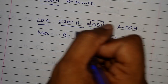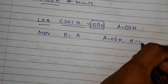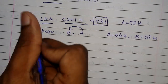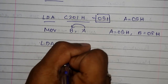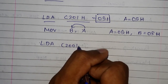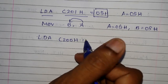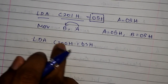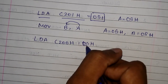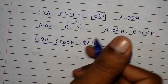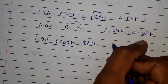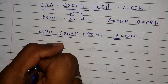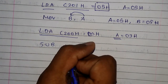Now let's move the contents of the accumulator to register B. Our accumulator has 05H and B also now has 05H — the contents are moved. Next, the third instruction is again LDA: we have 03H in memory location C200H, so after execution we will have 03H in the accumulator.